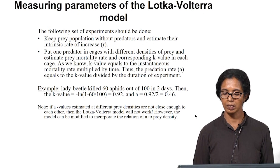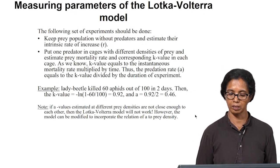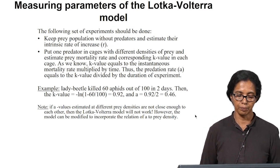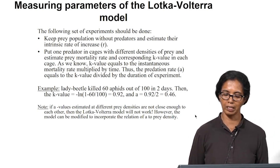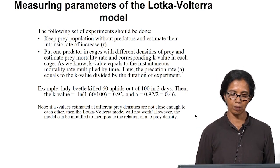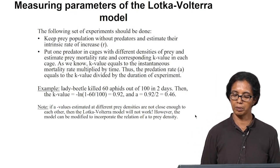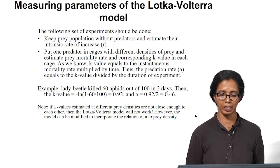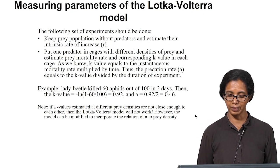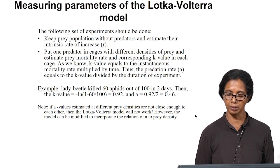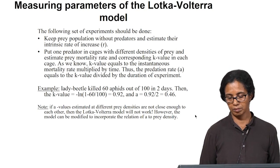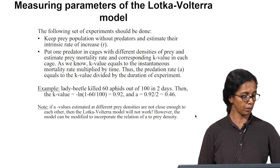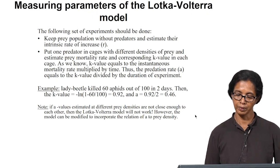For example, a lady beetle killed 60 aphids out of 100 in 2 days. We can determine the K-value as: K = −ln(1 − 60/100) = 0.92, and a = 0.92/2. The K-value equals the instantaneous mortality rate multiplied by time. Thus the predation rate a = K-value divided by the duration of experiment. If values of a estimated at different prey densities are not close enough to each other, the Lotka-Volterra model will not work. The model can be modified to incorporate the relation of prey density.